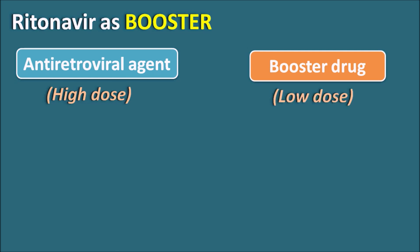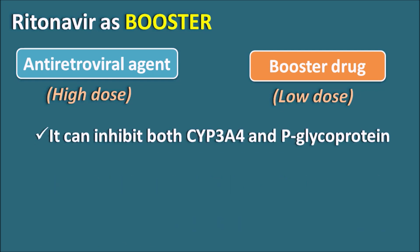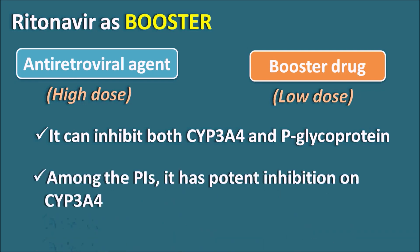Why is Ritonavir used as a booster drug? Ritonavir can inhibit both cytochrome P450 3A4 as well as P-glycoprotein, thereby increasing the bioavailability of other drugs. Another important thing is that among the other protease inhibitors, Ritonavir has the most potent inhibition on CYP3A4. So it is highly suitable as the booster drug compared with other protease inhibitors.